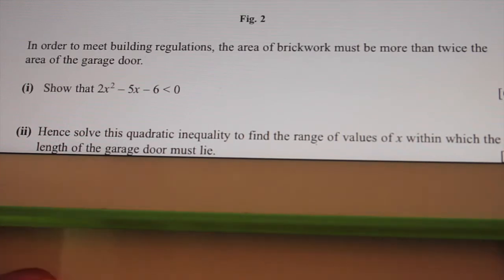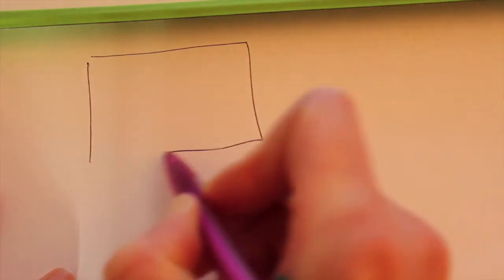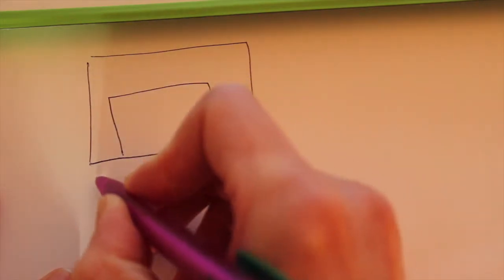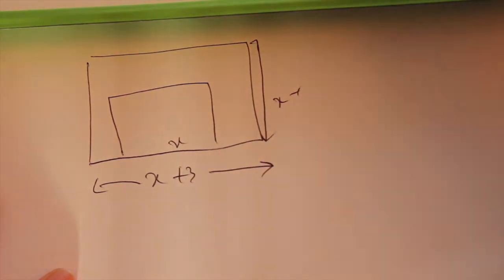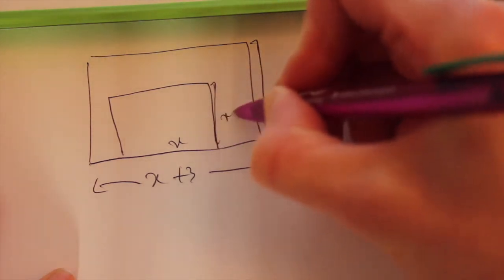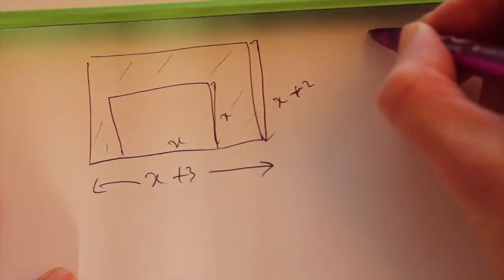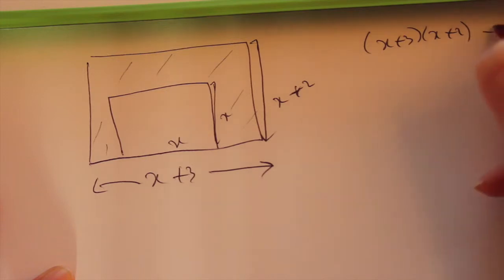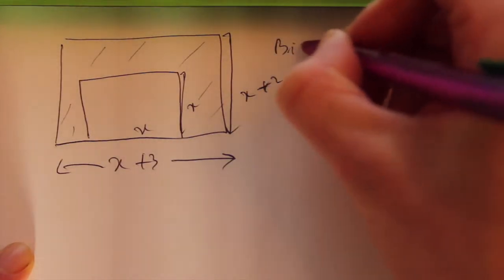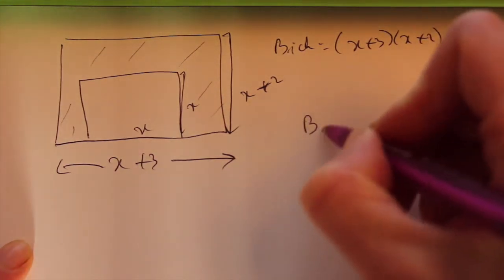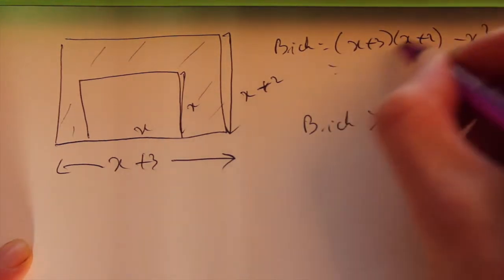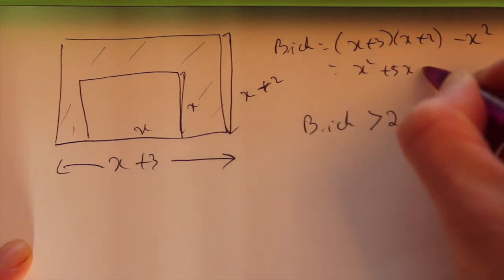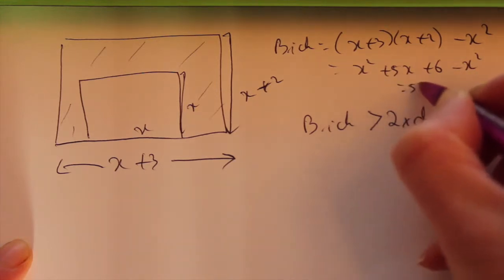In order to meet the building regulations, the area of the brickwork must be more than twice the area of the garage door. So if I find the area of the brickwork, which is this here, length as I said before is X plus 3. The total length is going to be X plus 2. And this here length is X. So the brickwork is the big rectangle, X plus 3, X plus 2, minus the garage door. So that's the brickwork. Now you're told the brickwork must be more than twice the door. So this here brickwork expression, I can just tidy up here. X squared plus 2X plus 3X is 5X plus 6 minus X squared. So that tidies up to give you 5X plus 6.